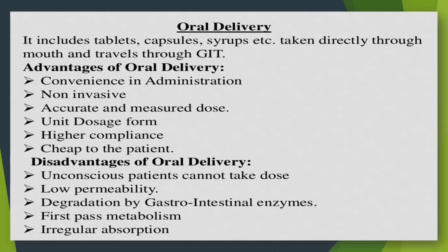First pass metabolism is a phenomenon of drug metabolism whereby the concentration of a drug, specifically when administered orally, is greatly reduced before it reaches the systemic circulation. It is the fraction of drug lost during the process of absorption, which is generally related to the liver and gut wall. The last disadvantage of oral delivery is irregular absorption.